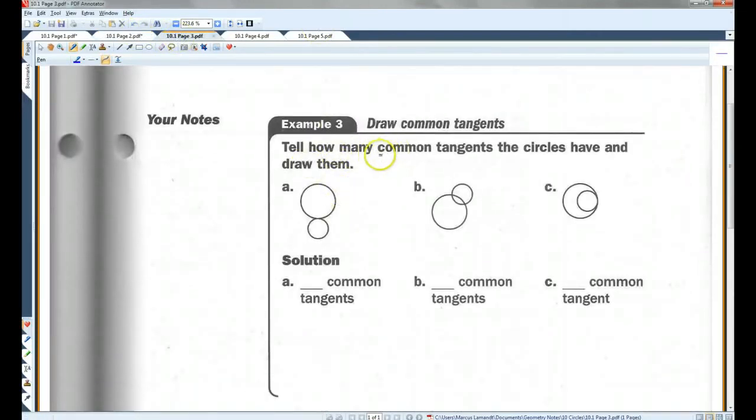Tell how many common tangents the circles have and draw them. A common tangent is a tangent that the circles share. So for example, this one, if I drew a tangent like this, that would be a common tangent, because it intersects both circles once. You could also draw a tangent, it's not a very straight line, like that. Or like this. And imagine that only hits once. And I think that's the only way. So this one has three common tangents.